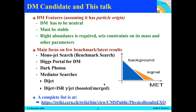On slide seven, these are the various Feynman diagrams. The typical signature is large missing transverse momentum plus something — a photon, a jet, or a W or Z — these are called mono-X signatures. There are also other signatures with virtual T-channel and S-channel where scalars or pseudo-scalars decay to dark matter particles along with top quark pair production. Additionally, the Higgs can decay invisibly, either directly to dark matter or in association, along with two Higgs doublet plus pseudo-scalar model and Z-baryonic production.